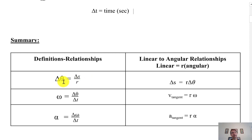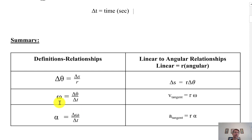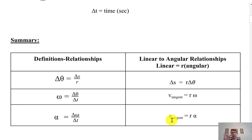Delta theta equals delta s over r — rearranging gives useful relationships we'll use often. These were the definitions from unit six: rotational speed is rotational displacement over time, and now rotational acceleration is changing rotational speed over time. We'll frequently need to translate from the rotational system to the linear system. Keep these equations handy in the table so you can look them up.